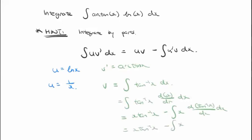The derivative of arctan(x) is 1/(1+x²), giving us the integral of x/(1+x²). Using substitution where u = 1+x², du = 2x·dx, fitting in the factor of a half, this straightforwardly gives the result: arctan(x)·x minus (1/2)·ln(1+x²) + C.